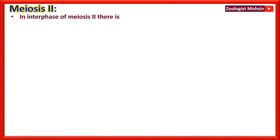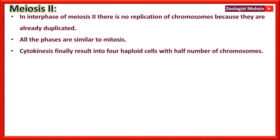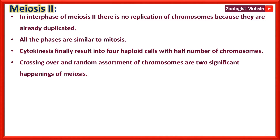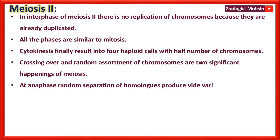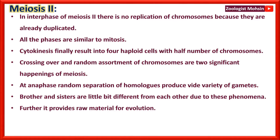Meiosis 2: in its interphase there is no replication of chromosomes because they are already duplicated. All phases are similar to mitosis. Cytokinesis finally results in four haploid cells with half the number of chromosomes. Crossing over and random assortment of chromosomes are the two significant happenings of meiosis. Random separation of homologues at anaphase produces a wide variety of gametes, which is why siblings differ from each other despite having the same parents. Meiosis also provides raw material for evolution.